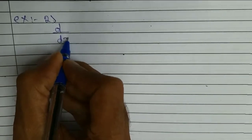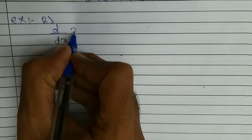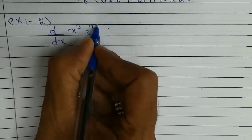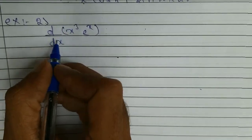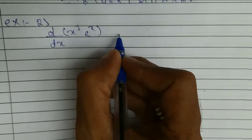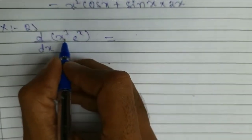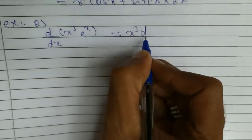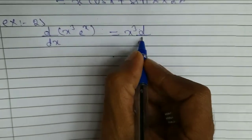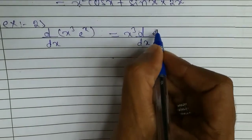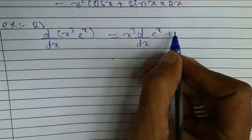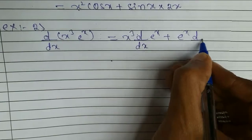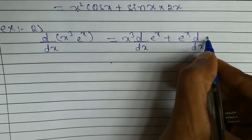Now we will see the second example: differentiation of x cube times e to the power of x. So here the value of u is x cube, differentiation d by dx of e to the power of x, plus the value of v, that is e to the power of x, times the differentiation of x cube.